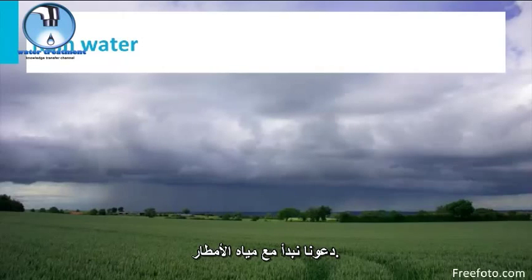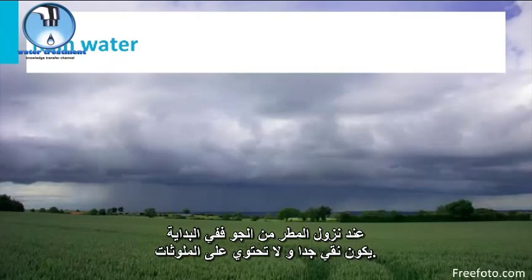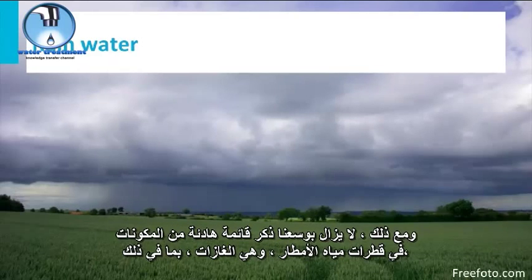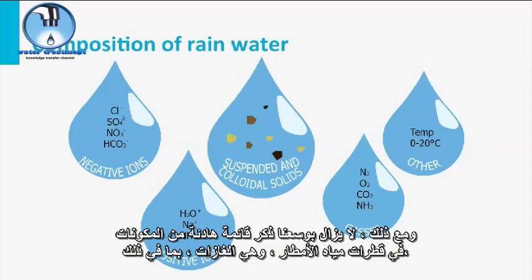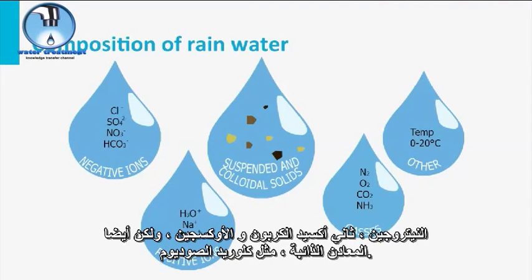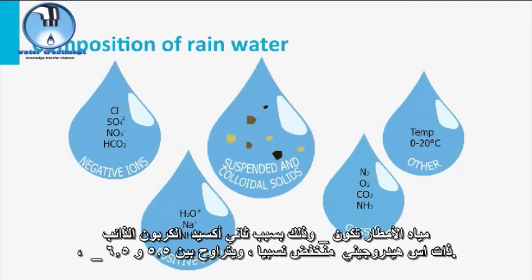Let's start with rainwater. When rain is falling from the air, it is initially very pure and does not contain contaminants. However, we can still list quite some ingredients in rainwater drops — namely gases including nitrogen, carbon dioxide, and oxygen, but also dissolved minerals such as sodium chloride. Rainwater has, because of excessive carbon dioxide, a relatively low pH between 5.5 and 6.5.